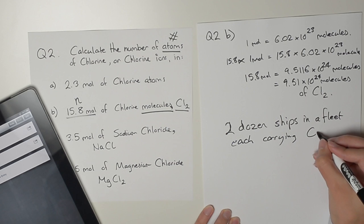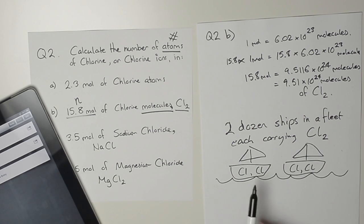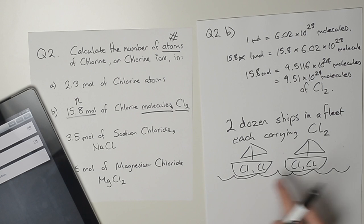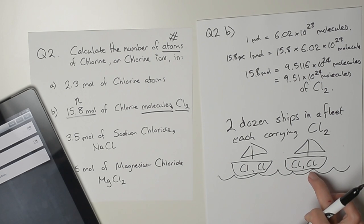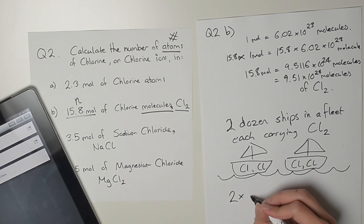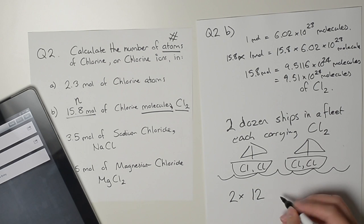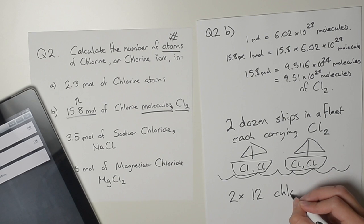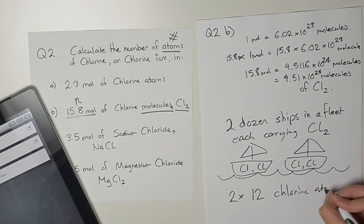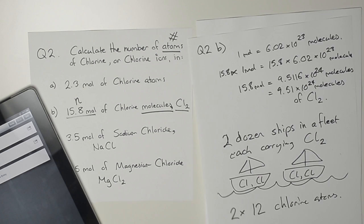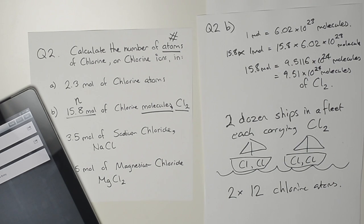If I have a dozen of these ships, then the number of chlorine atoms would be 2 in every ship. So our calculation would be 2 times 12, because that's a dozen, which gives us 24.